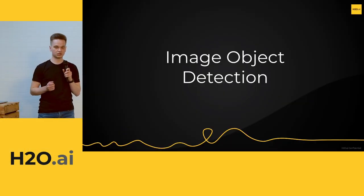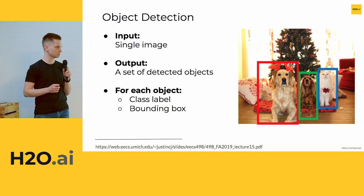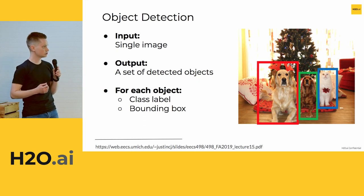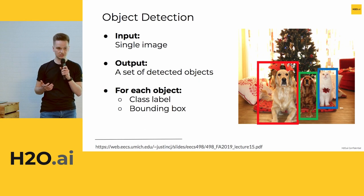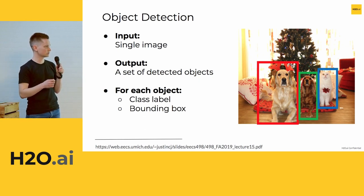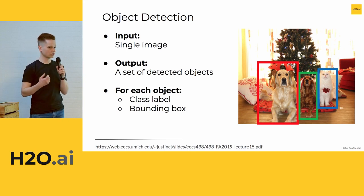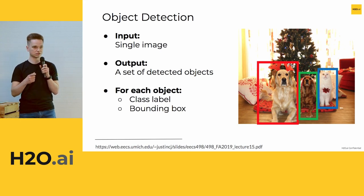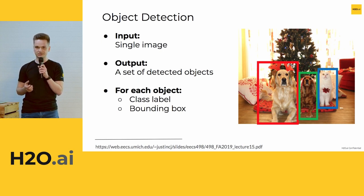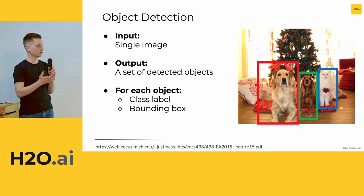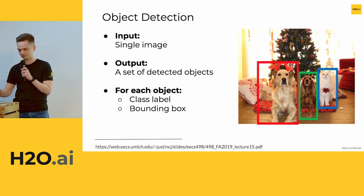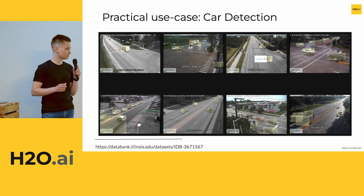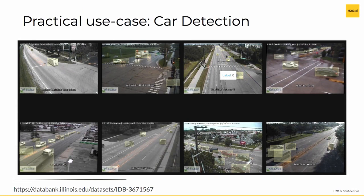Today I'll be mostly talking about image object detection. The definition is pretty straightforward: we have an input image and we need to output a set of predicted objects. For example, we have two classes — dogs and cats — and we detect all of them and draw a bounding box around each object. The output is a set of detections with class labels and bounding box locations. The complication compared to simple image classification is that we need to tell not just what's on the image, but also the location of each object. For the presentation I'll use a simple car detection dataset with images from traffic cameras in the United States, with bounding boxes around all passing cars.